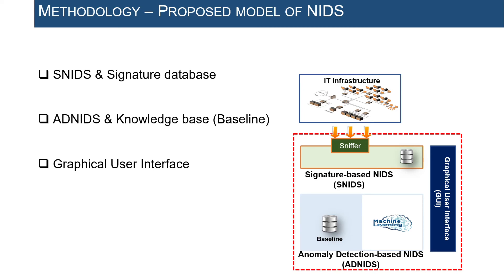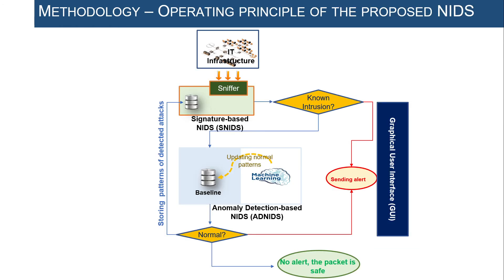The ADNIDS module detects irregularities with respect to the baseline profile of the network. The baseline is modeled using a decision tree algorithm applied to the optimized CICIDS 2017 dataset. Finally, the proposed system includes a graphical user interface (GUI) to perform administration and tuning tasks.